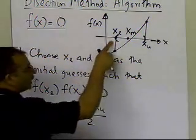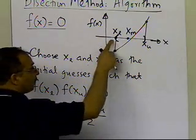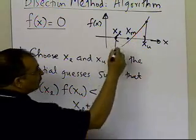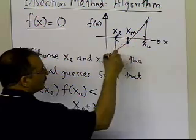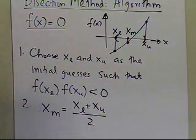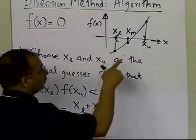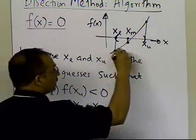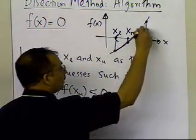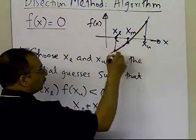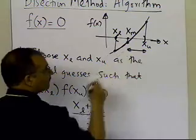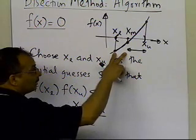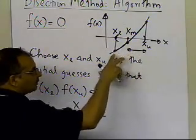Before, you had your guess going from xl to xu — that was the width of the interval. Now the width of the interval is going to be only half of this, because you're going to check whether the value of the function at xm is negative or positive, and between which sub-interval it is changing sign. You then keep only that half-interval where the sign change occurs.